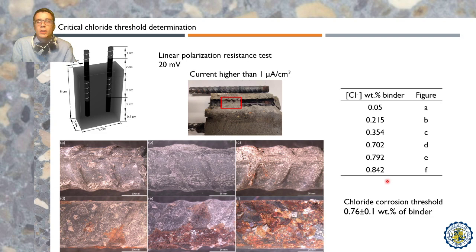For example, using the diffusion coefficient, the time to corrosion initiation can be predicted, as the onset of corrosion — as we can see in the figure — will appear once the chloride threshold is reached.